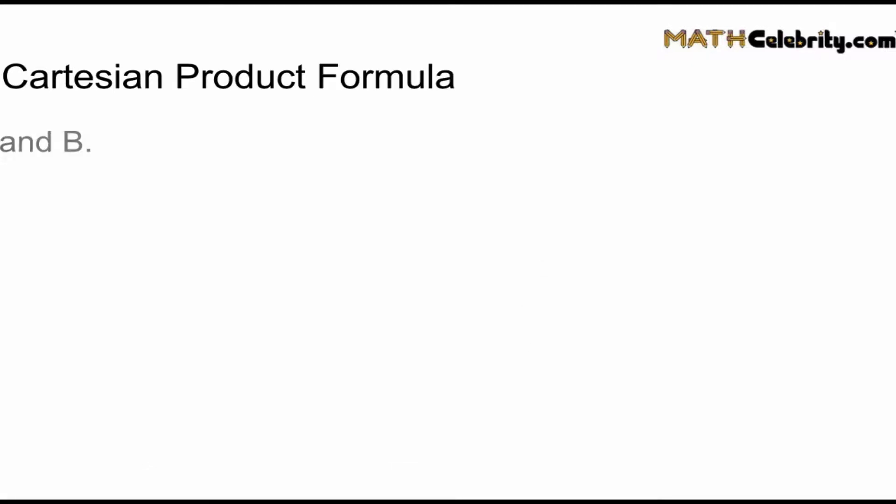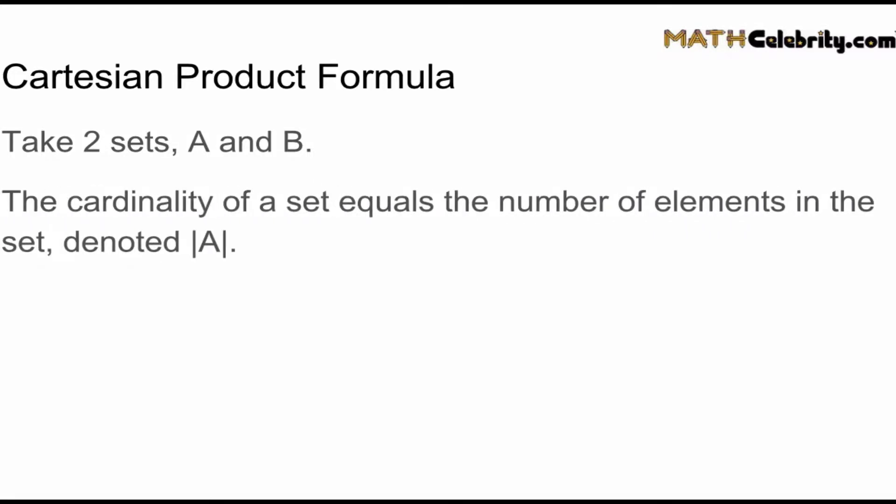Let's walk through the Cartesian product formula. We're going to take two sets, set A and set B, and we want to find out how many ordered pairs we expect in the Cartesian product. It's worth going back to one concept in set notation called cardinality. The cardinality is the number of elements in a set; you can also call it the count of the set. For set A, we denote the cardinality of set A with braces enclosing the A.